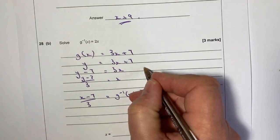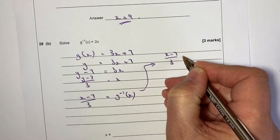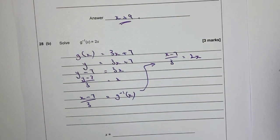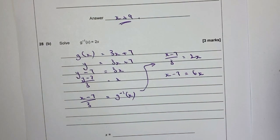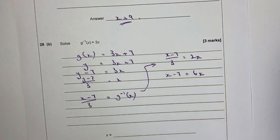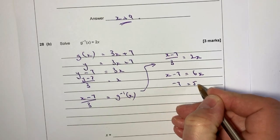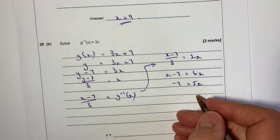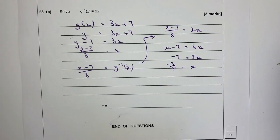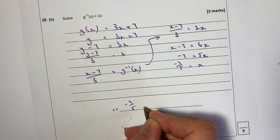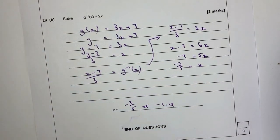So we have (x minus 7) over 3 equals 2x. Multiplying both sides by 3 gives x minus 7 equals 6x. Bringing the x over to the right-hand side: minus 7 equals 5x. Dividing by 5 gives x equals minus 7 over 5, which is minus 1.4 as a decimal. That is the answer — we've solved for x.